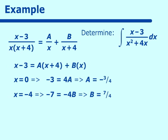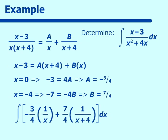Substituting back into the integral, we have negative 3 fourths times 1 over x plus 7 fourths times 1 over (x plus 4), dx. Integrating gives negative 3 fourths ln of |x| plus 7 fourths ln of |x plus 4|, plus a constant. We can combine these or leave them separated.